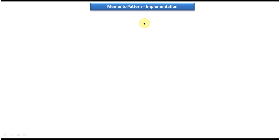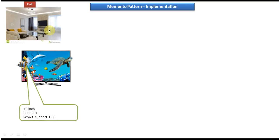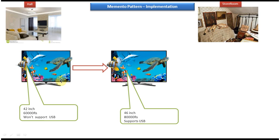Now we will see the scenario of Memento Design Pattern. I buy a 42-inch LED TV which is 60,000 rupees and it won't support USB. So I buy this LED TV and place it in the hall. After some point of time I think, let me buy a 46-inch LED TV. So I buy a 46-inch LED TV which is 80,000 rupees and this supports USB. So I have to put the 42-inch LED TV in the store room and place the 46-inch LED TV in the hall.